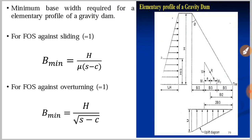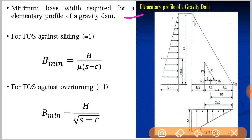For a normal gravity dam and an elementary profile gravity dam the same forces act. However, for the elementary profile of a dam, a minimum base width is required for safety against sliding and overturning. The minimum base width required for safety against sliding is: B minimum equals H divided by mu times (S minus C), where H is the height of the dam.